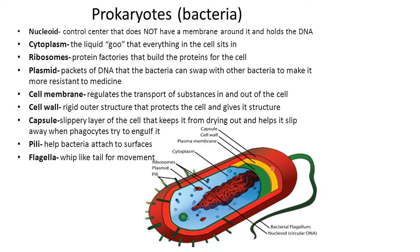Most bacteria have all three of these layers in that order. The outside hair-like structures are called pili, which help attach to surfaces. Some larger pili can exchange plasmids through conjugation. The longer structure is the flagellum, which is whipped around and used for locomotion.